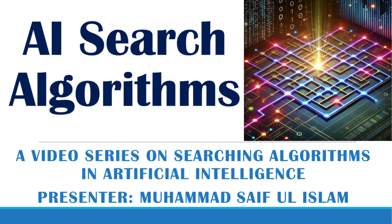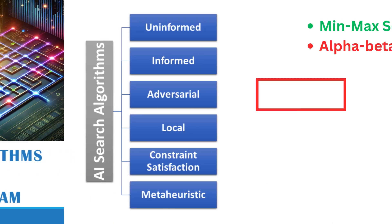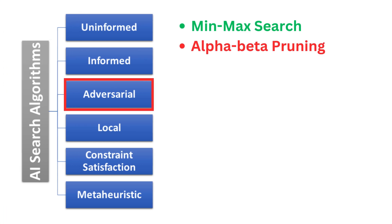Assalaamu Alaikum. Welcome back to my video series on searching algorithms in artificial intelligence. In the previous video we started the adversarial search and discussed the min-max searching algorithm. In this video we will discuss alpha-beta pruning. Alpha-beta pruning is more efficient than min-max as it allows AI to ignore larger parts of the game tree while still making the optimal decision. But how does it work? Let's break it down.